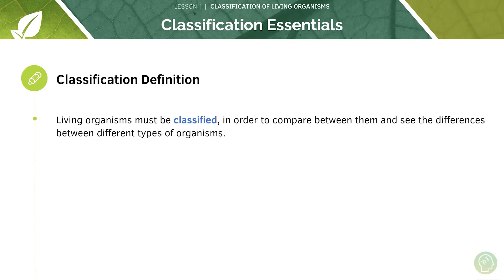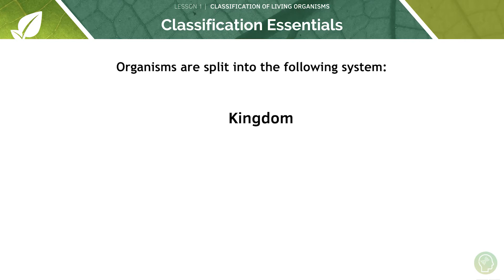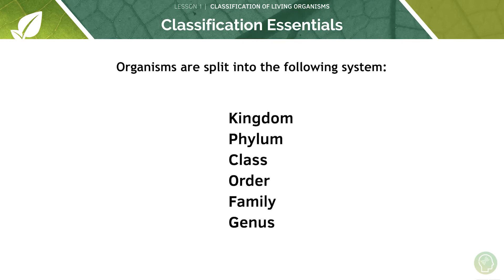Living organisms must be classified in order to compare between them and see the differences between different types of organisms. This system was devised in the 1700s, and organisms are split into the following levels: kingdom, phylum, class, order, family, genus, species. We'll go through what each of these mean now.